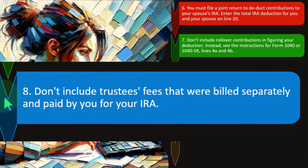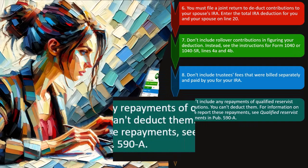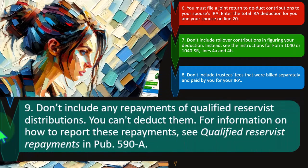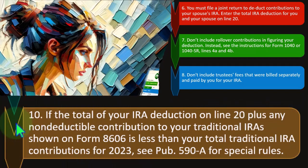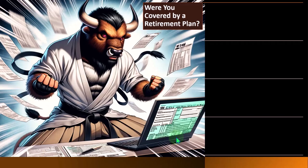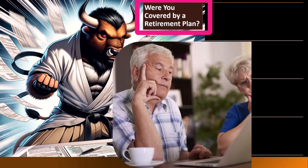Number eight: don't include trustees fees that were billed separately and paid by you for your IRA. Number nine: don't include any repayments of qualified reservist distributions — you can't deduct them; see qualified reservist repayments in Publication 590-A. Number ten: if your IRA deduction on line 20 plus any non-deductible contributions shown on Form 8606 is less than your total traditional IRA contributions for 2023, see Publication 590-A for special rules.